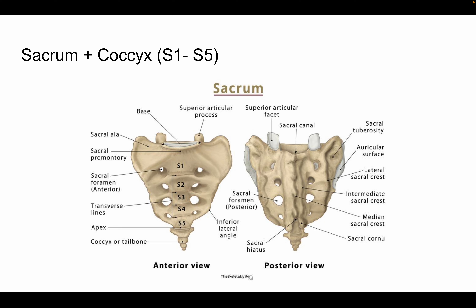Now let's go into the sacrum. The sacrum is considered a vertebra and part of the vertebral column within the axial skeleton. It's important to learn the parts of the sacrum, which is more difficult than you might think. The sacral vertebrae is made of five different segments — S1 through S5 — that have been evolutionarily fused because there was a selective advantage to having them fused.